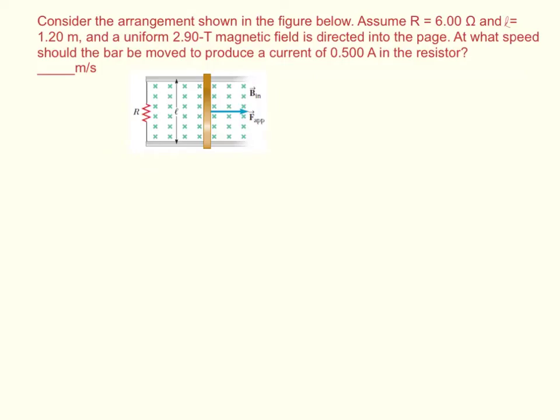Consider the arrangement shown in the figure below. Assume that the resistance is equal to 6 ohms and the length is equal to 1.2 meters, and a uniform 2.9 Tesla magnetic field is directed into the page. At what speed should the bar move to produce a current of 0.5 amps in the resistor?